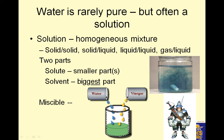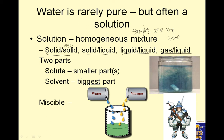Water is rarely pure, but it is often a solution. A solution is a homogeneous mixture — that means the samples are the same. They can be a solid and a solid, a solid and a liquid, a liquid and a liquid, or a gas and a liquid. A solid and a solid is called an alloy, and the other ones are just called solutions.